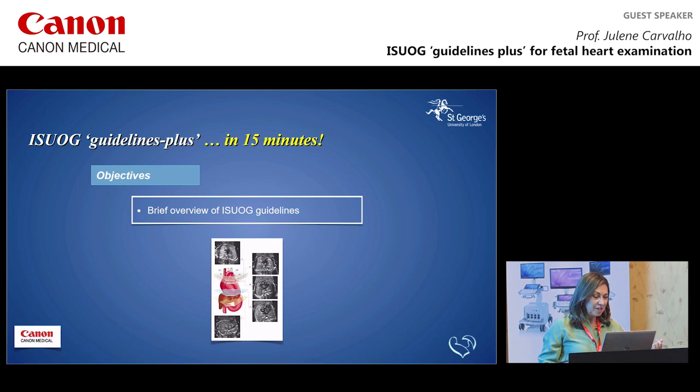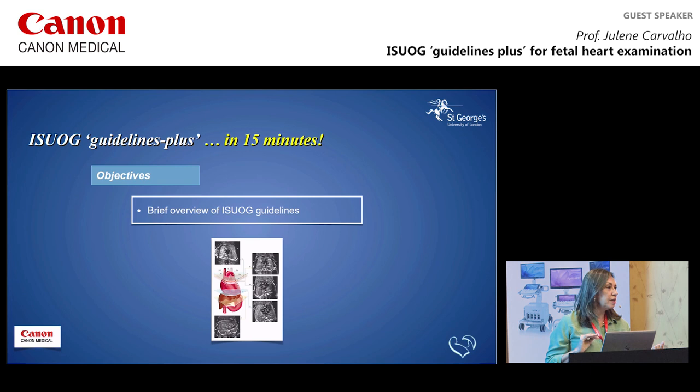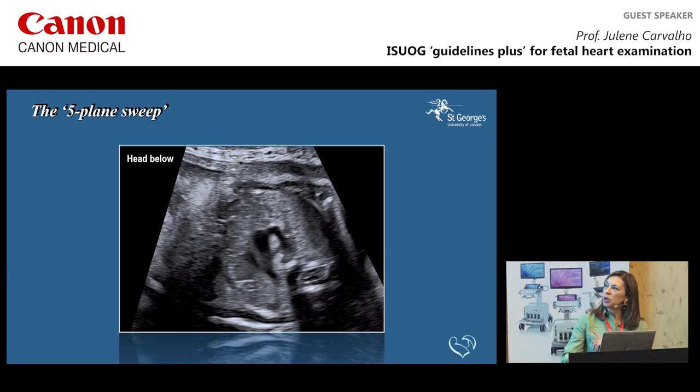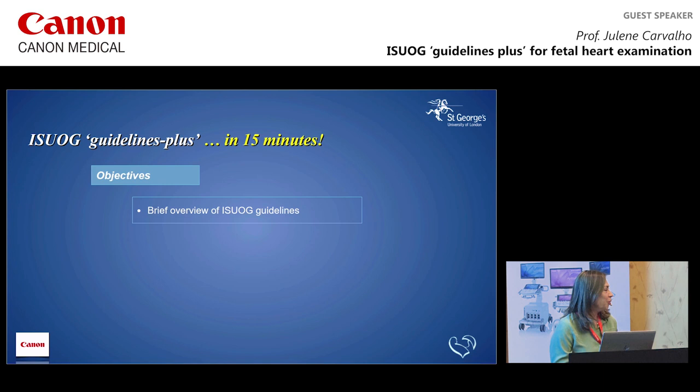Looking through those five planes — a diagram initially presented by Simcha Yagel and modified for the Israel guidelines in 2013 — we cover the five planes from situs to the three-vessel trachea view. This is a sweep starting from situs, going through the four-chamber view, the left ventricular outflow tract, and the three-vessel trachea view, though it's not playing in a loop, which is a pity.